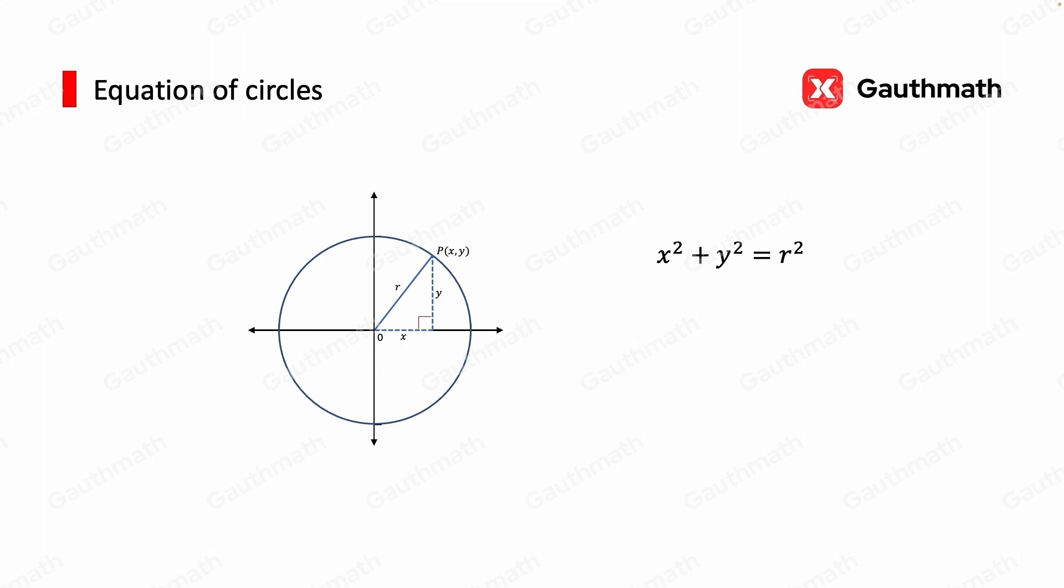Suppose we have a unit circle, which is a circle with radius of 1. And we can check if the points on the circle satisfy our equation. Take the point as an example. 1 squared plus 0 squared equals 1. And the relationship holds.